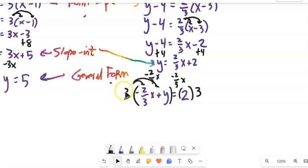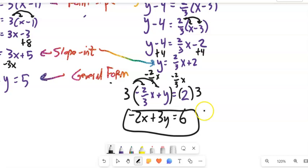So negative 2/3 times 3. 3 divided by 3 is 1, so that's negative 2x. 3 times y is 3y. 2 times 3 is 6. And there's the general form.